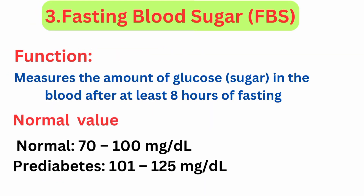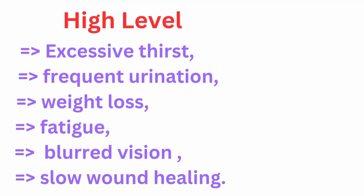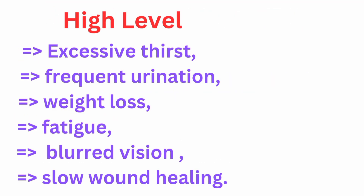Fasting blood sugar (FBS): its function is to measure the amount of glucose in the blood after at least eight hours of fasting. Normal value is 70 to 100 mg/dL. Pre-diabetes range is 101 to 125 mg/dL. High level symptoms include excessive thirst, frequent urination, weight loss, fatigue, blurred vision, and slow wound healing.